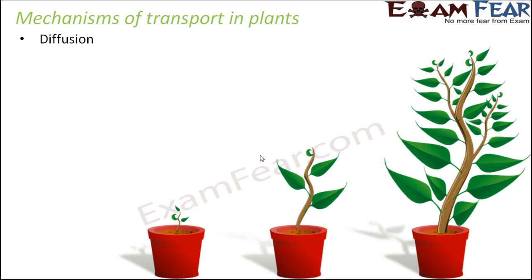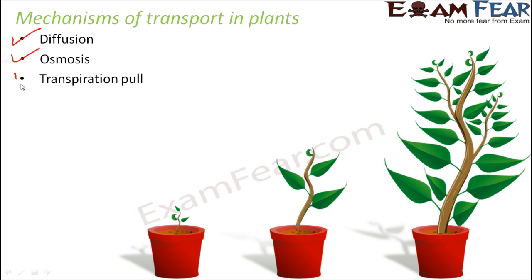Some of the important mechanisms are diffusion, osmosis, and transpiration pull. These are common mechanisms by which substances — whether water, food, or minerals — get transported from one part of the plant to another. Xylem and phloem are just the vessels that carry the substances, but there has to be some reason causing movement in a particular direction.